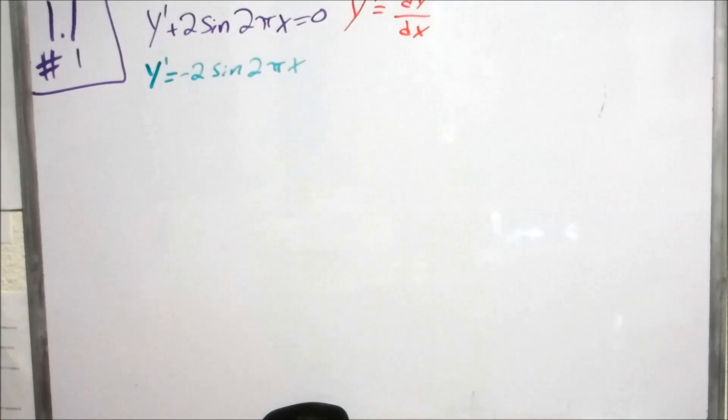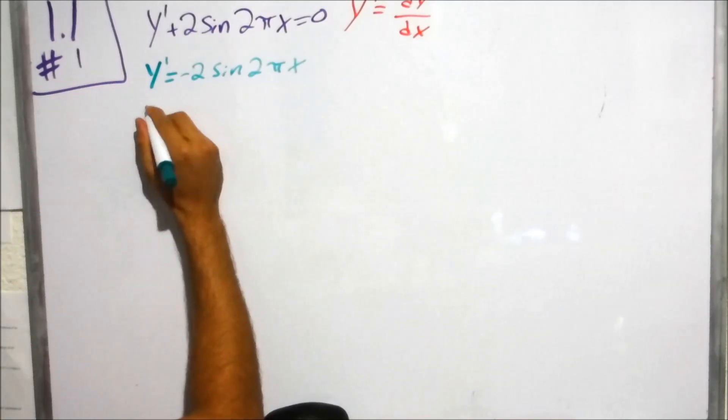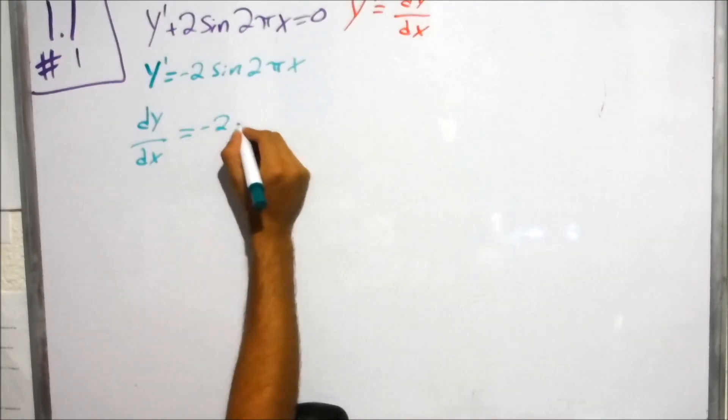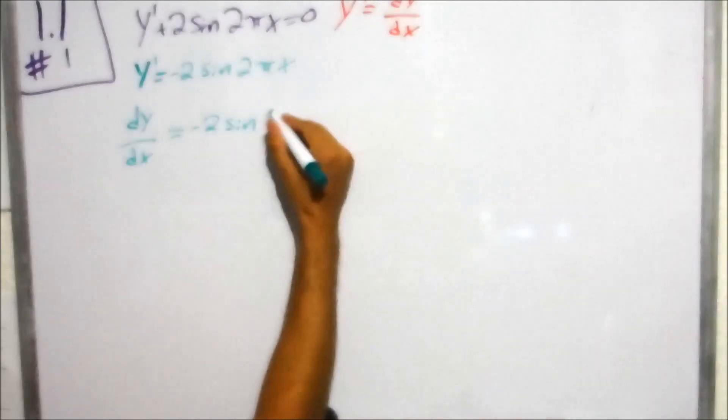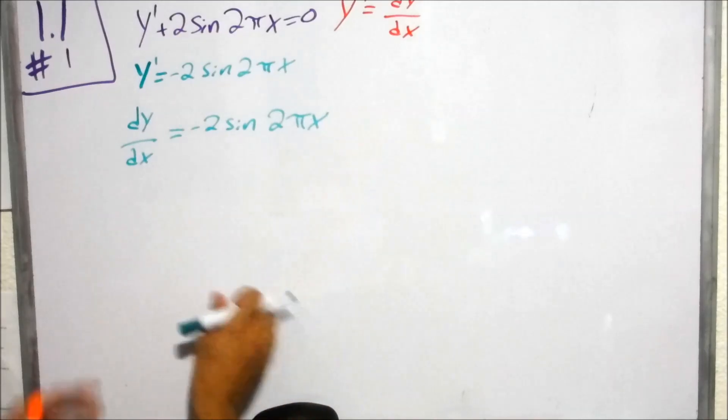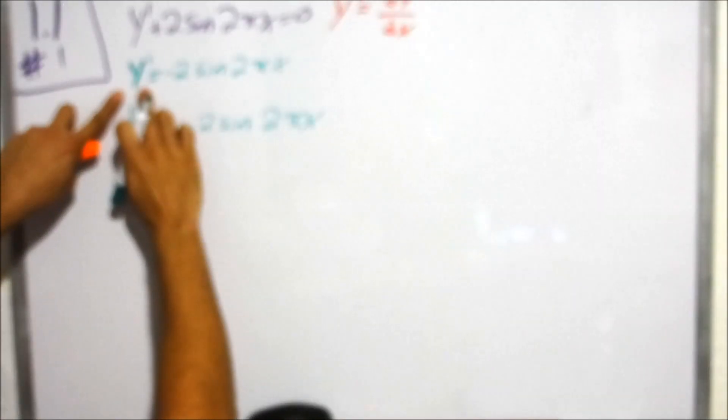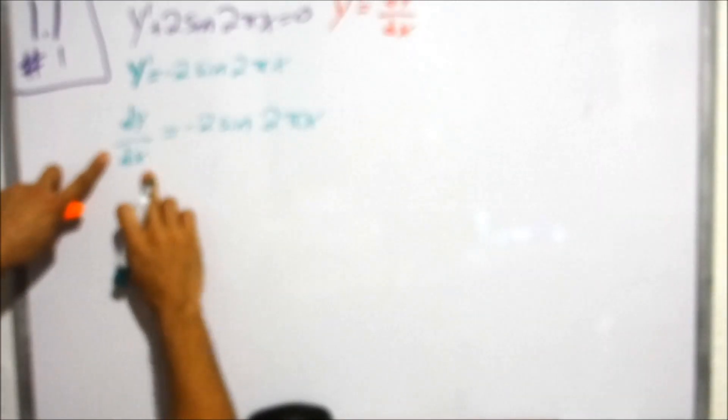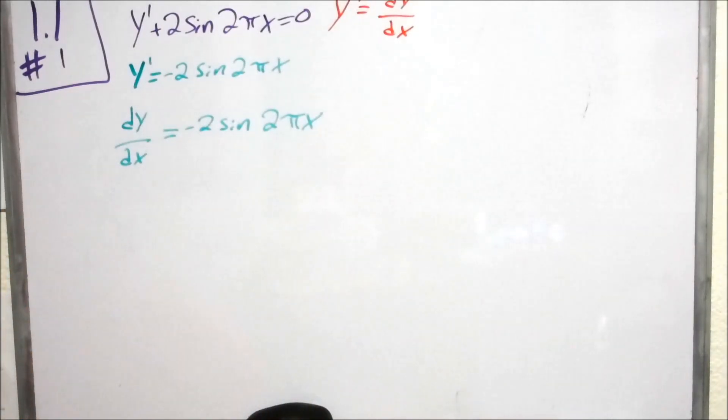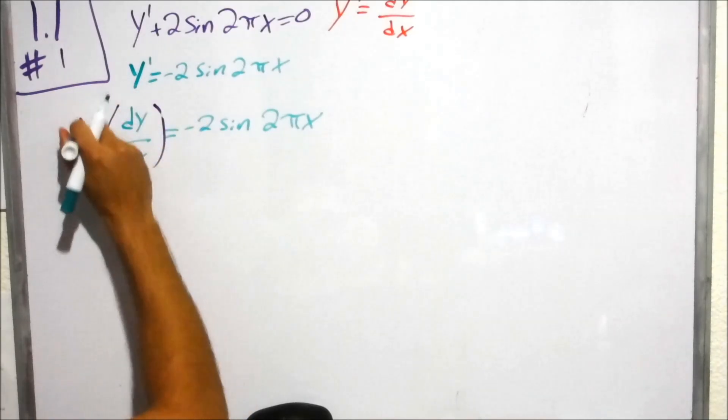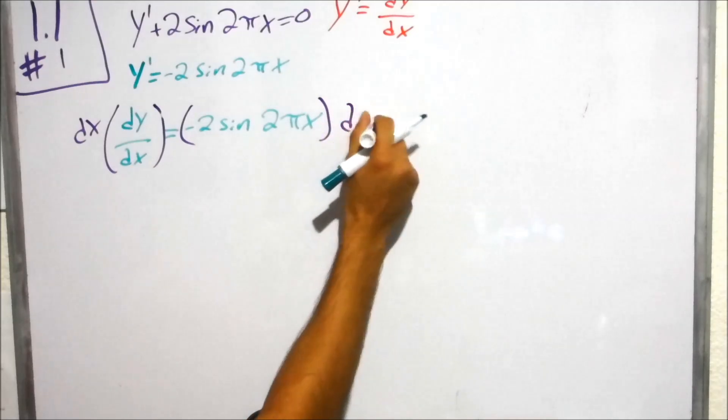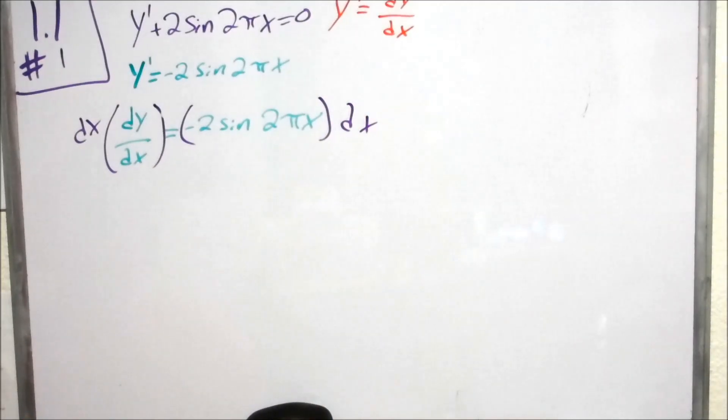That being said, this y here is dy over dx, equaling negative 2 sine of 2 pi x. Now to get, since this y prime here, it does contain the dx, as we have here, we can multiply both sides by dx. And we'll have everything separated, just as we want.